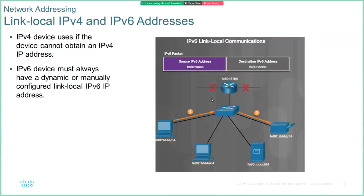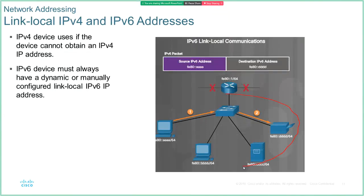IPv6 uses another naming convention called a link-local address, which it configures automatically regardless of your static or manual IPv6 configuration. All it represents is a dynamic address that it uses just within this network segment to talk to other devices within that local network — it cannot be used to communicate off the network. You can identify these addresses because they always start with 'FE80'.